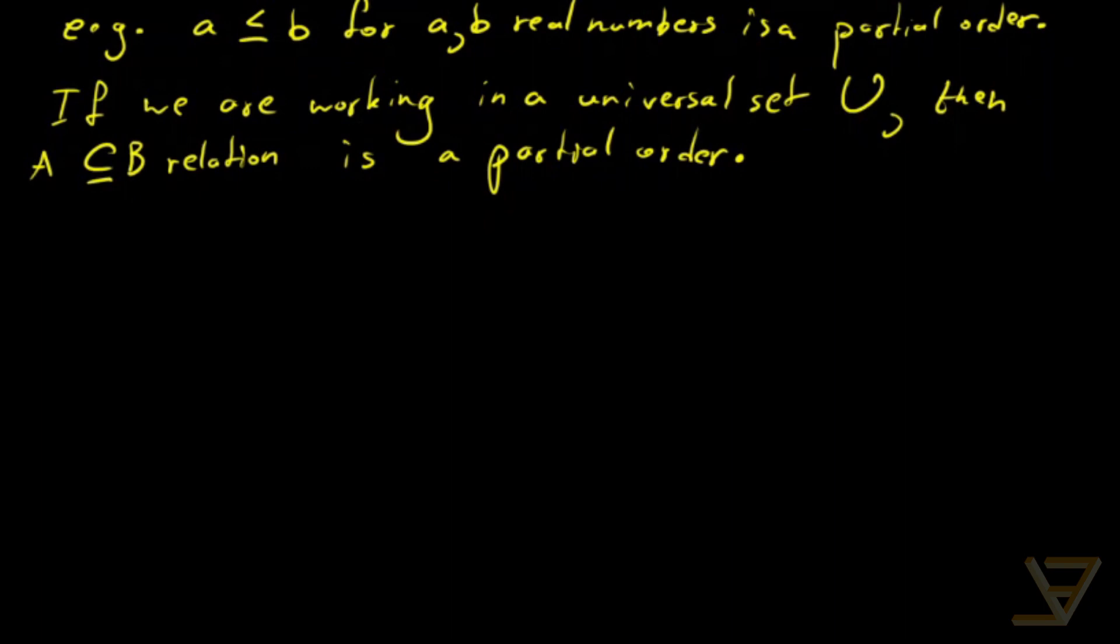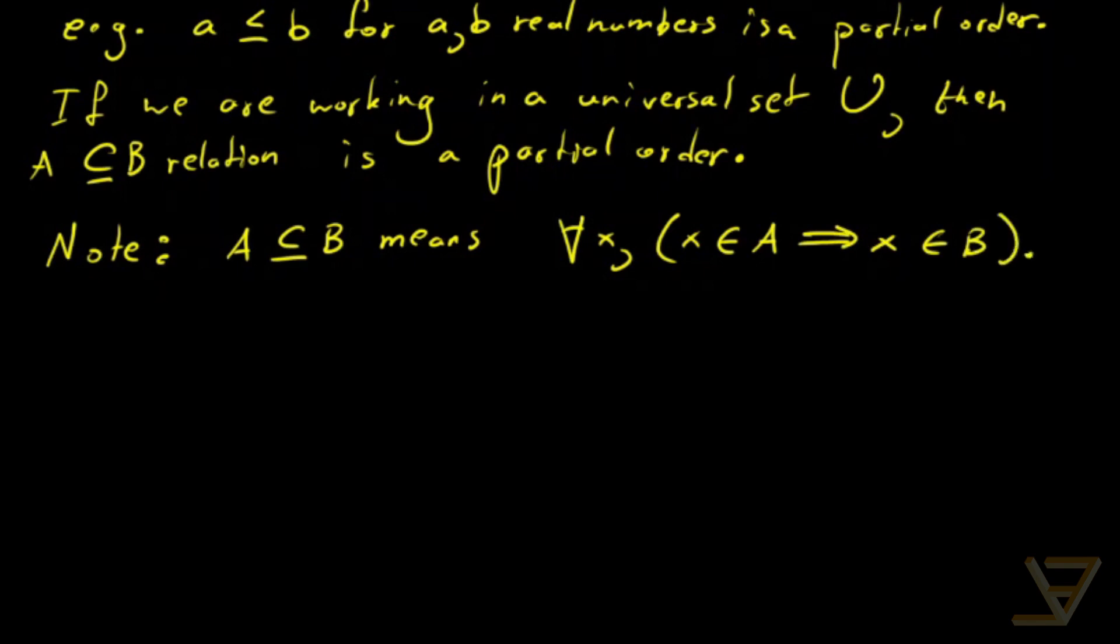Let's prove this, but just so you know the formal definition, A being a subset of B means for all x in the universal set, that x being in A implies x is an element of B as well, and we're going to be repeatedly using this definition.